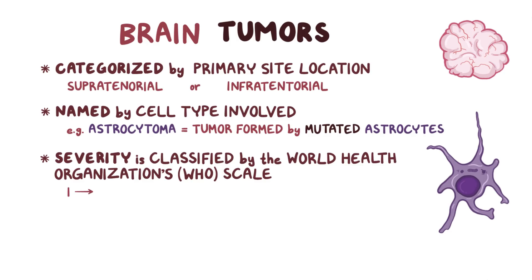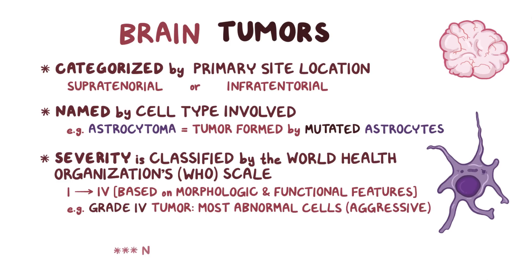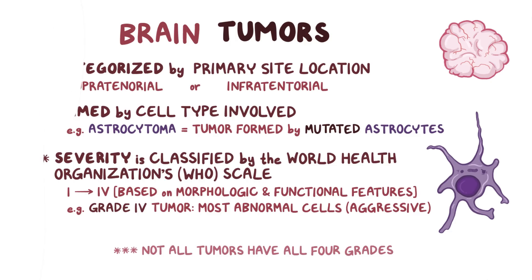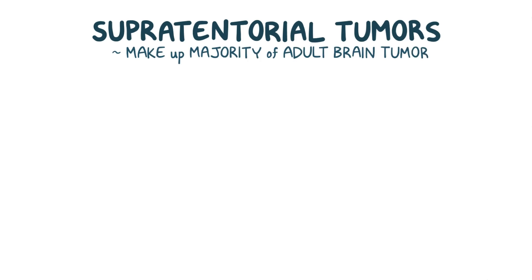The WHO scale goes from 1 to 4 based on the morphologic and functional features of the tumor cells, with a grade 4 tumor being the most abnormal-looking cells that also tend to be the most aggressive. Not all tumors have all four grades, because some tumors are basically always more benign, whereas others are just more aggressive. Let's start with tumor types that are generally supratentorial, because those make up the majority of adult brain tumors.